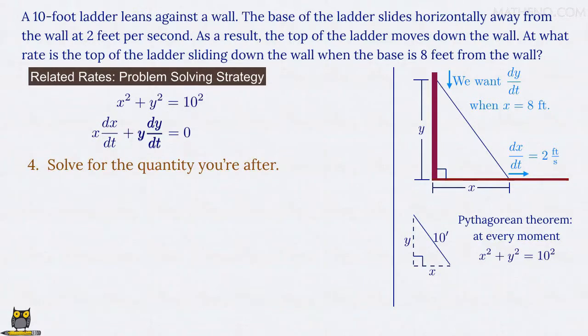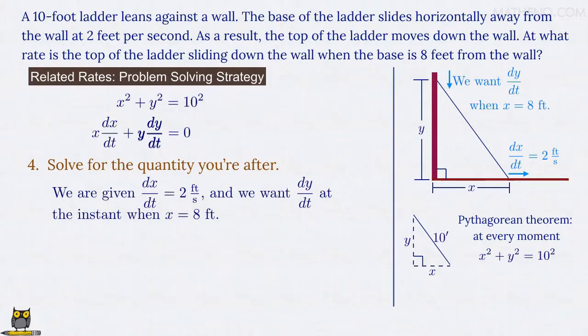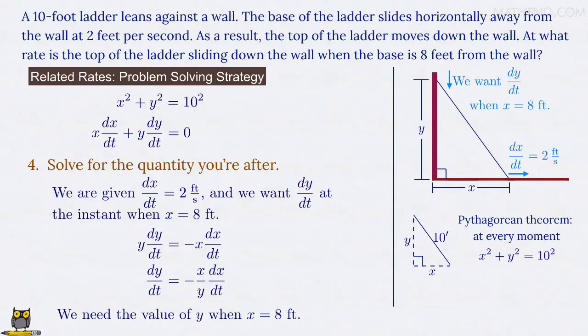That takes us to the fourth step, which is to solve for the quantity we're after. Remember, we want the value of dy/dt at the instant when x equals 8 feet. So let's isolate the y dy/dt term on the left and move the x dx/dt term to the right side of the equation where it becomes negative. We can then divide both sides of the equation by y to get rid of it from the left, and we're left with dy/dt equals negative x over y times dx/dt. We'd like to substitute values at this point, but while we know the value of x is 8 feet at our moment of interest, we don't yet know the value of y to be able to plug it into our equation here. And so to find that, we need to solve a quick subproblem.